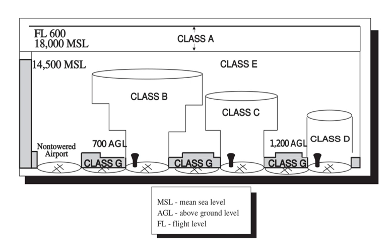Other airspace areas is a general term referring to the majority of the remaining airspace. It includes Local Airport Advisory, Military Training Routes, Temporary Flight Restrictions, Parachute Jump Aircraft Operations, Published VFR Routes, Terminal Radar Service Area, and National Security Area. Local Airport Advisory is a service provided by facilities located on the landing airport, which have a discrete ground-to-air communication frequency or the tower frequency when the tower is closed, automated weather reporting with voice broadcasting, and a continuous ASOS or AWOS data display, or other continuous direct reading instruments or manual observations available to the specialist.